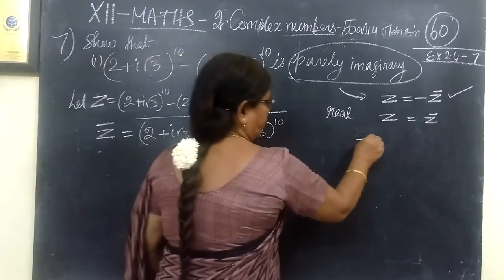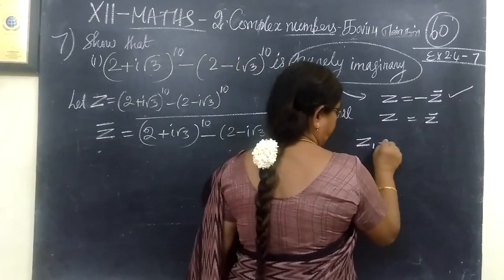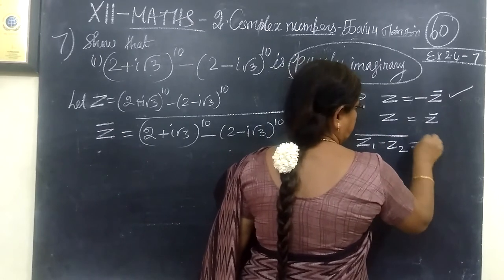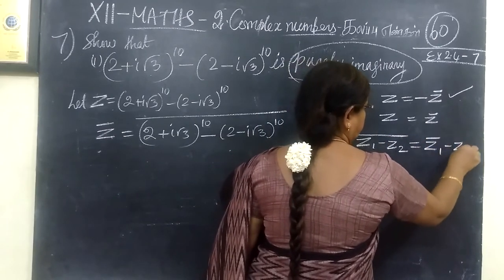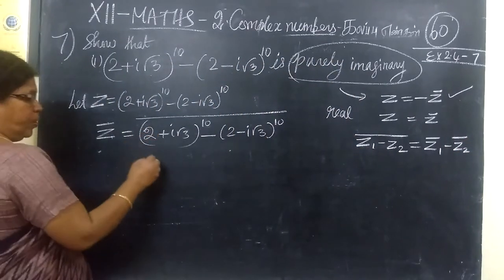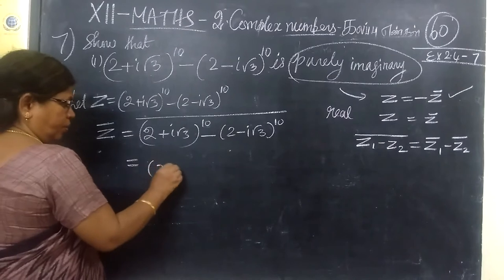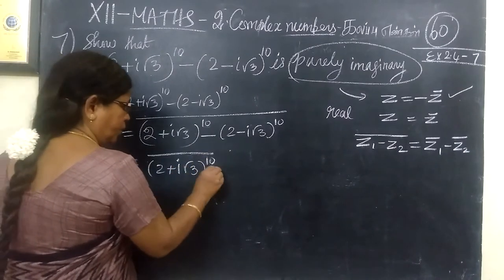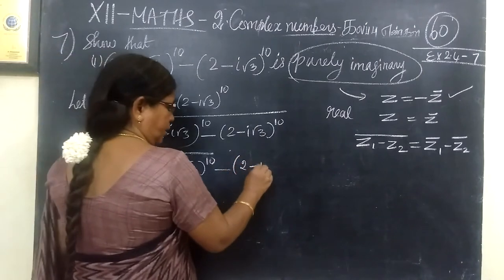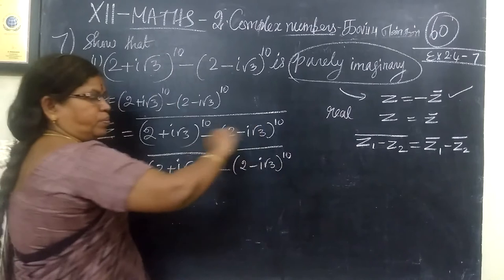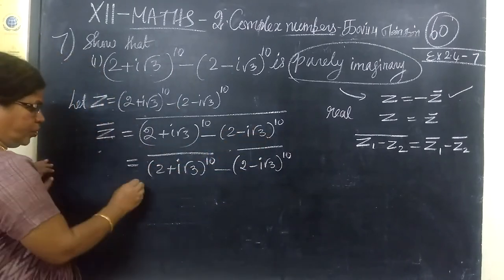And we know the formula Z1 minus Z2 all bar equal to Z1 bar minus Z2 bar. So this is the formula. So we apply this. Then we need to add bar. So this is the bar here. Now (2 plus i root 3 whole power 10) whole bar minus (2 minus i root 3 whole power 10) bar.